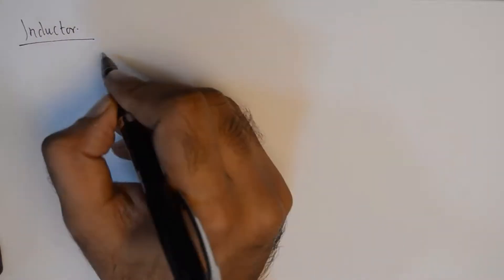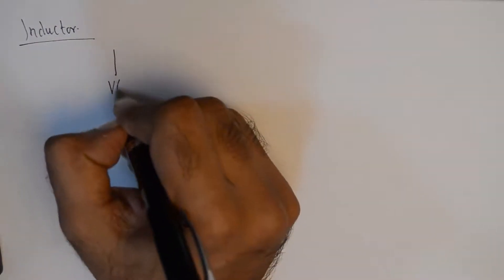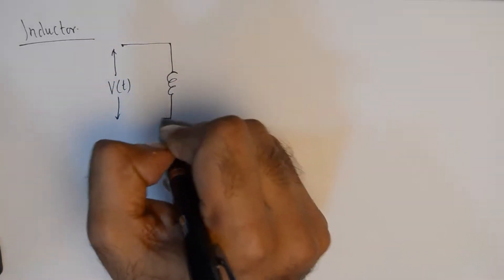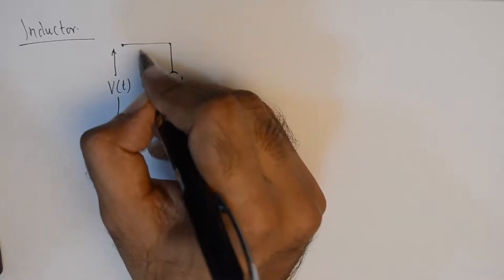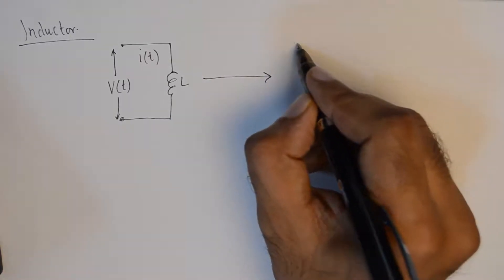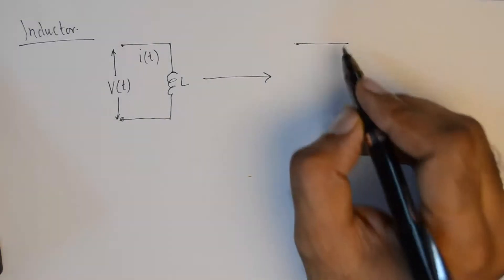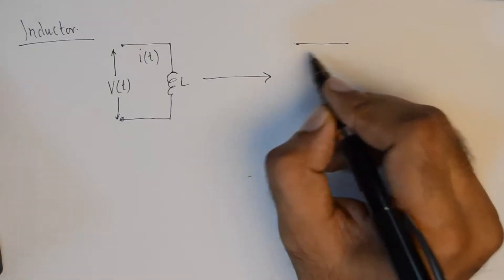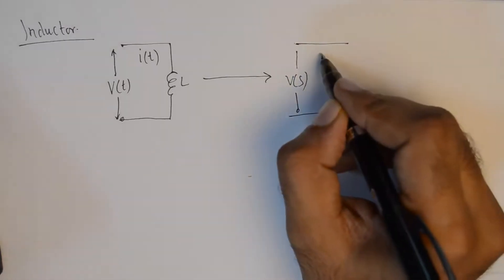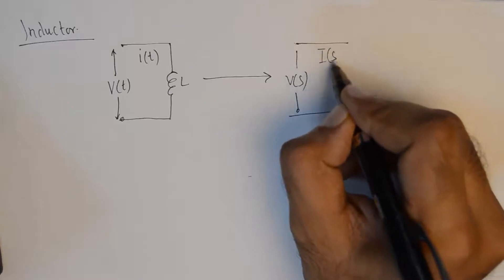Moving on to the equivalent circuit for the inductor. When we talk about the inductor, we'll draw the same things where a voltage is connected to the inductor L, and everything happening here is in time domain. We'll need to transform this into frequency domain using Laplace transform. We'll see what happens here — this voltage v takes up the form V(s) and the current takes up the form I(s).